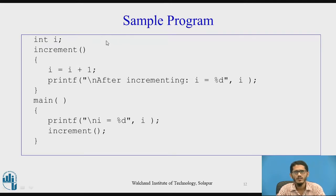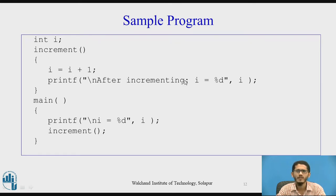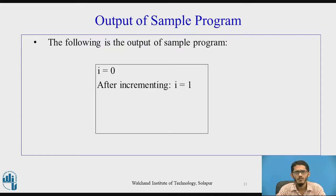Here is a sample program: we have declared a global variable i, an increment function where i is incremented by one and its value is displayed after incrementation. In the main function, since i is a global external variable, its value is initialized to zero. The first printf in main displays i equal to zero. Then the increment function is called, where i is incremented to one. So the output is: before incrementation i was zero and after incrementing i has become one.